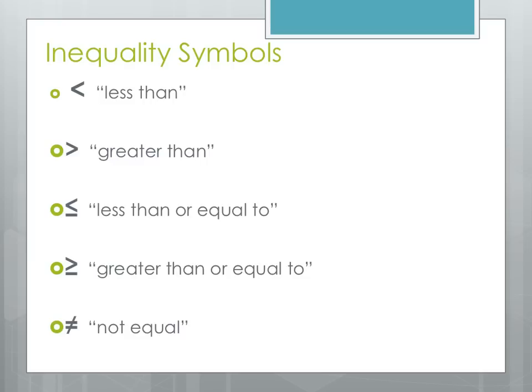Let's look at the different inequality symbols. The first one is less than — it's a little caret that points to the left, and that means the number on the left is smaller than the number on the right. So we might use something like 1 is less than 3, because 1 is indeed smaller than 3.